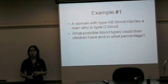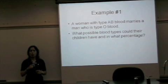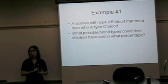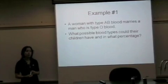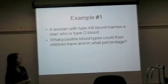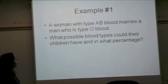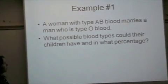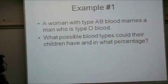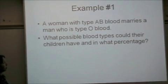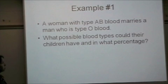Let's go through a couple of Punnett Square examples because you might have to do one of these for your final exam. Our first example says a woman with type AB blood marries a man who is type O blood. What possible blood types could their children have and in what percentage?